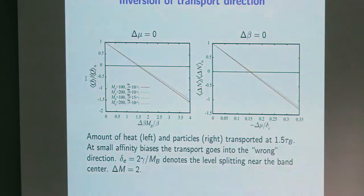This is the amount of on the left hand side the amount of heat and that's the amount of transported particles at a time 1.5 as a function of delta beta. And you see at large values of delta beta, so to say, the directionality of the usual normal directionality sets in, but for small temperature differences this instantaneous contribution still dominates and gives you a transport, so to say, in the wrong direction or unexpected direction.